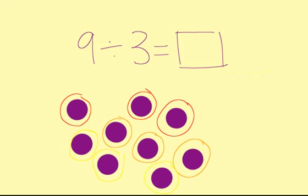So, now let's count how many are in each group. There are one, two, three for red, one, two, three for orange, and one, two, three for yellow. So, nine divided by three is three.